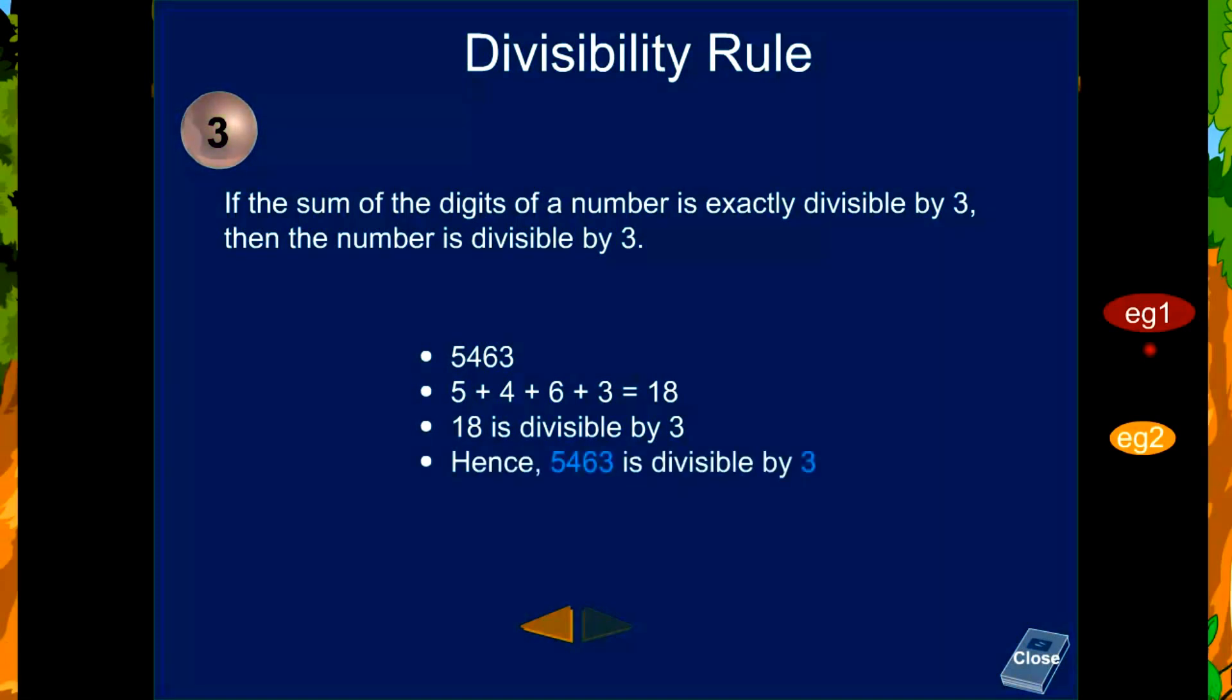Hence, 5463 is divisible by 3. Take any number that you know is a multiple of 3. Add the digits of the number. Their sum will always be divisible by 3. Share this magic with your friends.